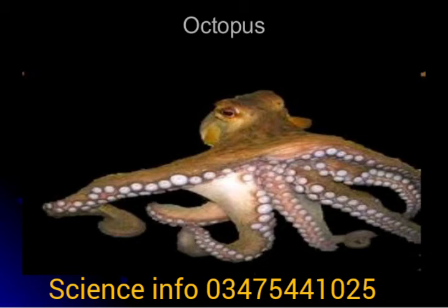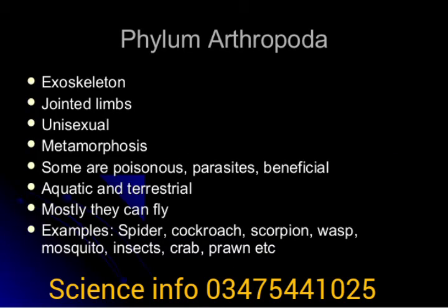Bivalves have laterally compressed, plate-like gills. These are some characteristics of the class Bivalvia. Phylum Arthropoda includes living organisms having jointed legs and a segmented body. Arthropods are found on land and in water.